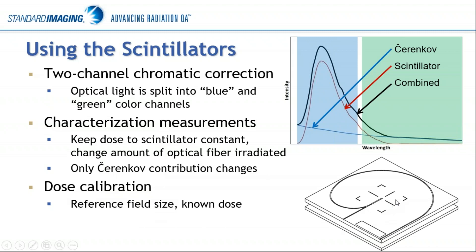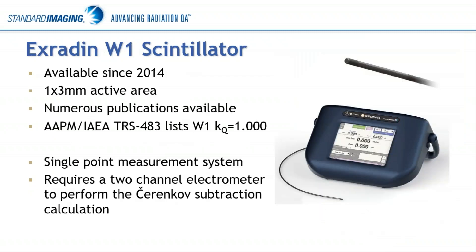You can then do a dose calibration. The slab for the W1 shows a 10x10 field marked with the minimum fiber configuration — give it a known dose at a known depth — and you can then report your measurements in terms of the dose that the scintillator is receiving. The W1 scintillator, as I mentioned, is our first generation device. It has been on the market since 2014, has a 1x3 millimeter active area, and there are quite a few publications about its use and response listed on our website.